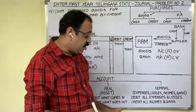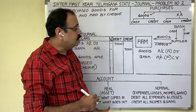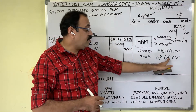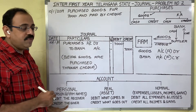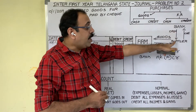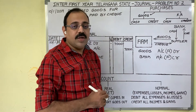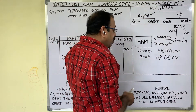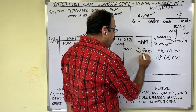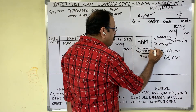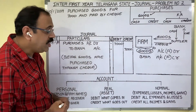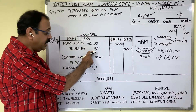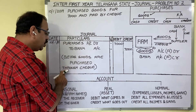Apply the double entry principles. For real account: debit what comes in, credit what goes out. Goods are coming into the firm — debit goods account. For personal account: debit the receiver, credit the giver. Bank is giving money to the supplier — bank is the giver, credit bank account. When goods are coming in debit, instead of writing 'goods' we should write 'purchases'. The final entry is: purchases account Dr to bank account. Narration: being goods are purchased through cheque.